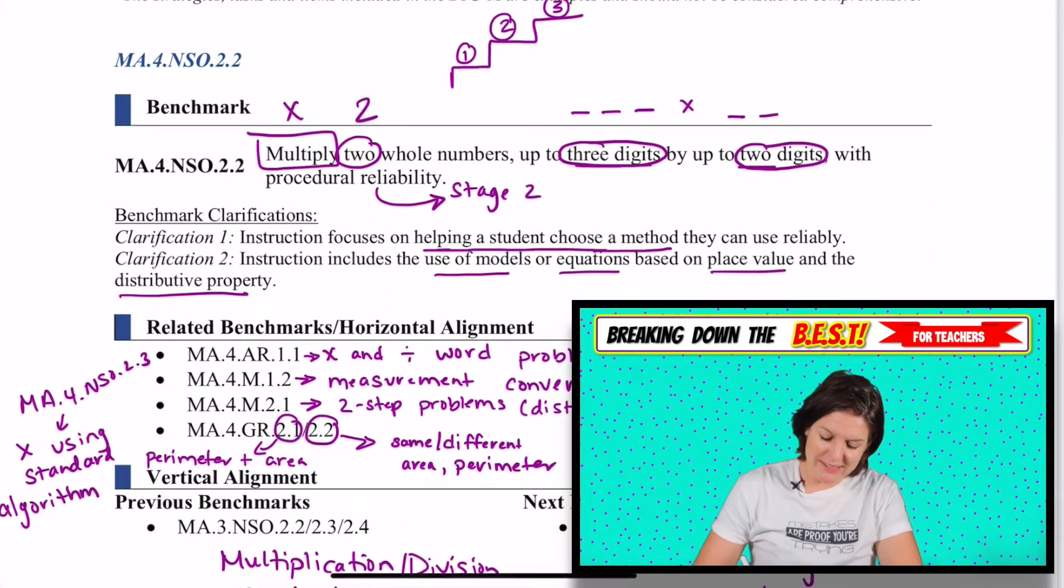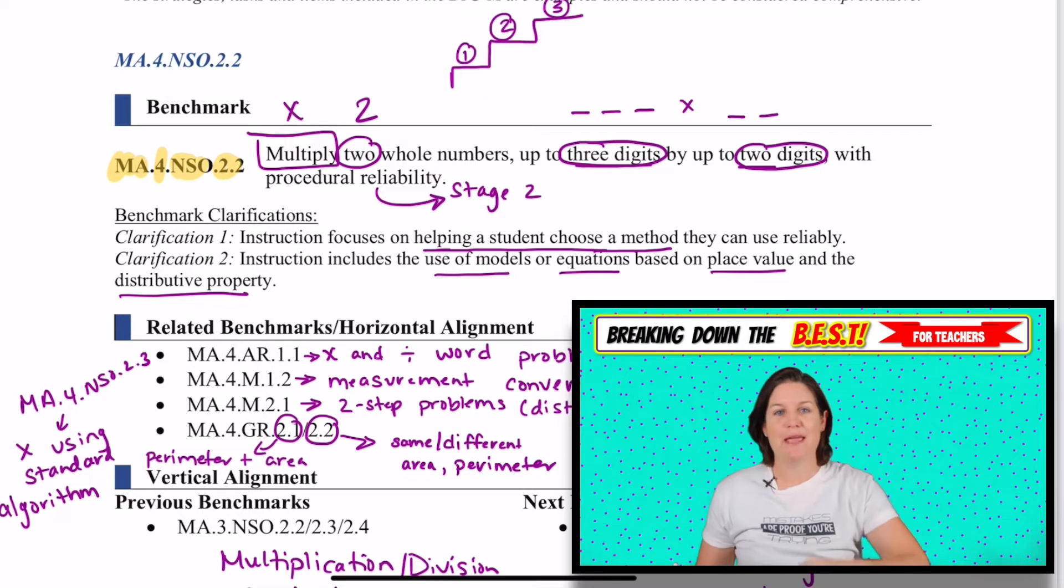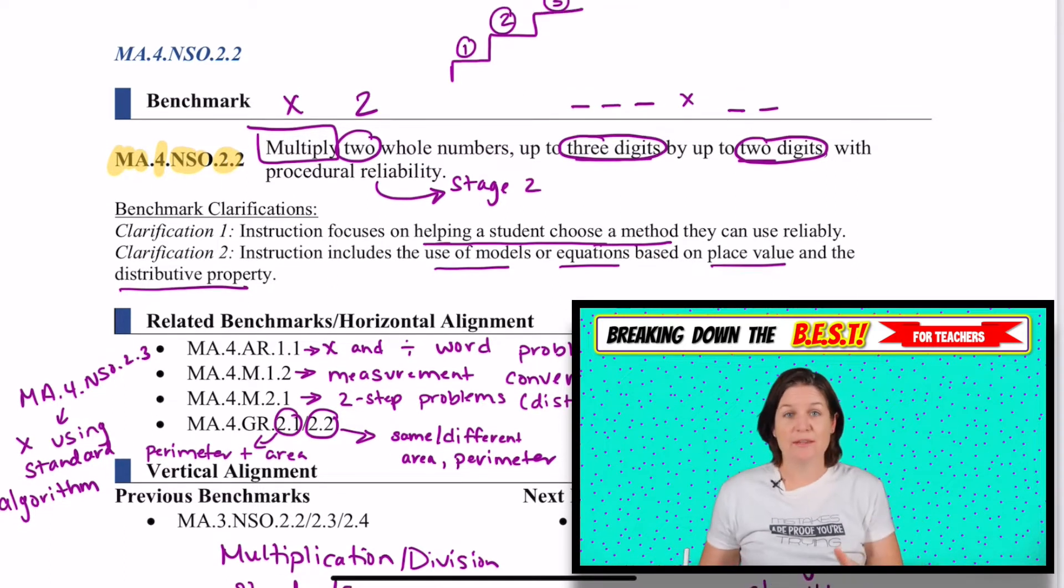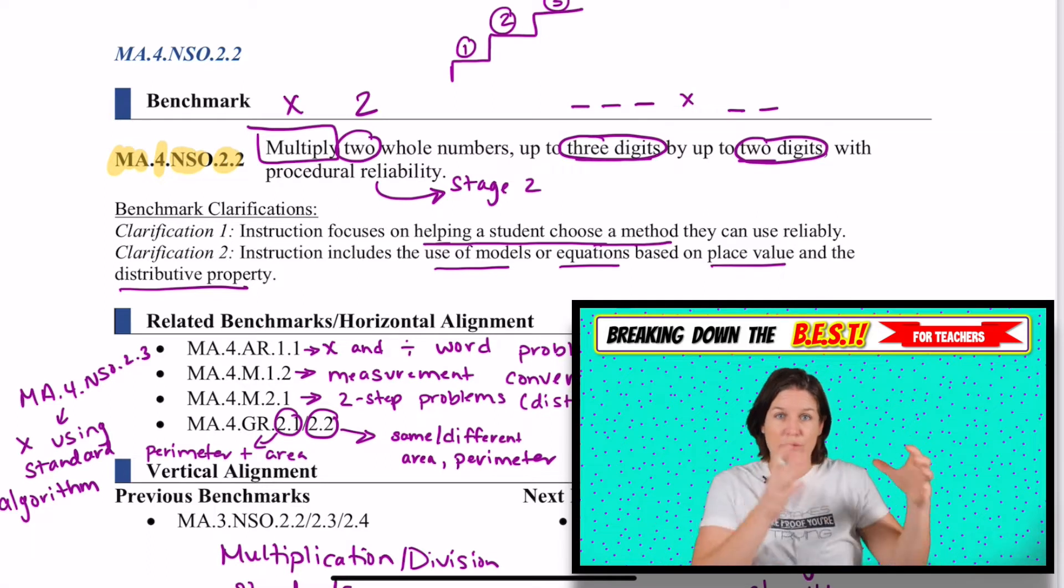So let's jump right into it with the following BEST standard for today. We are going to be tackling MA.4.NSO.2.2. MA stands for math, 4 stands for fourth grade, NSO stands for number sense and operations, and 2.2 is our standard for today. By the way, this document that I'm using is not something that I created. It is available to the public. The Florida Department of Education puts it out. They put a lot of work and time into this, and I'm just kind of showing you how I tackle it, what some of my thoughts are, and how what we're going to tackle today in the standard relates to what's available to you with taking on the BEST.